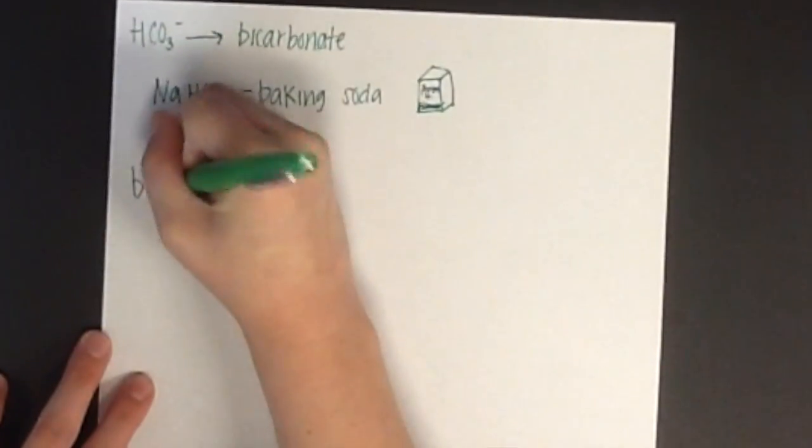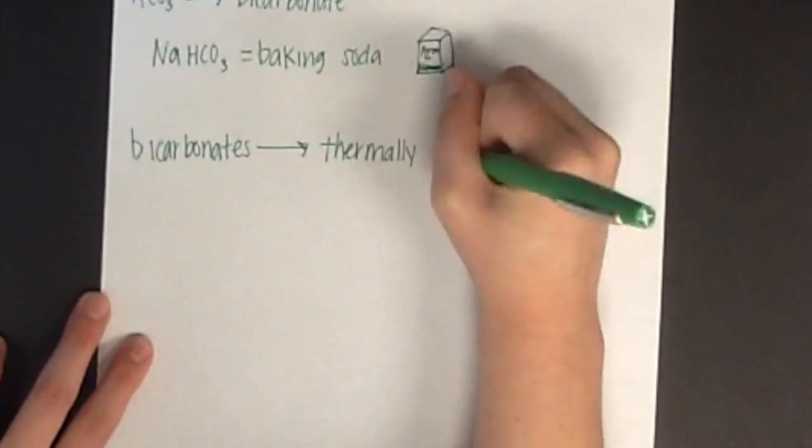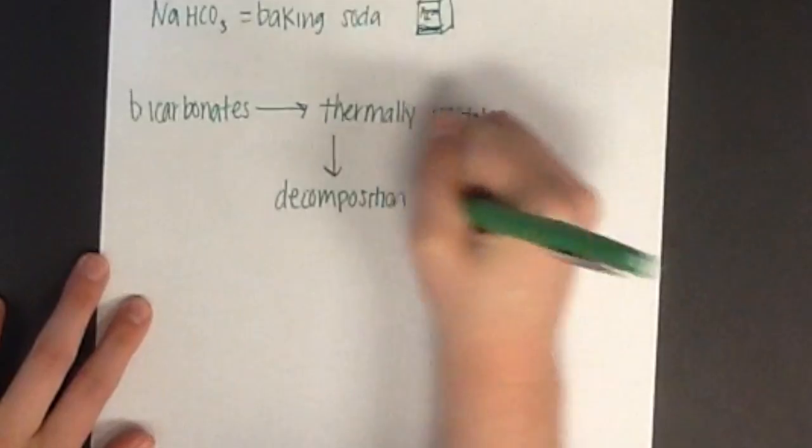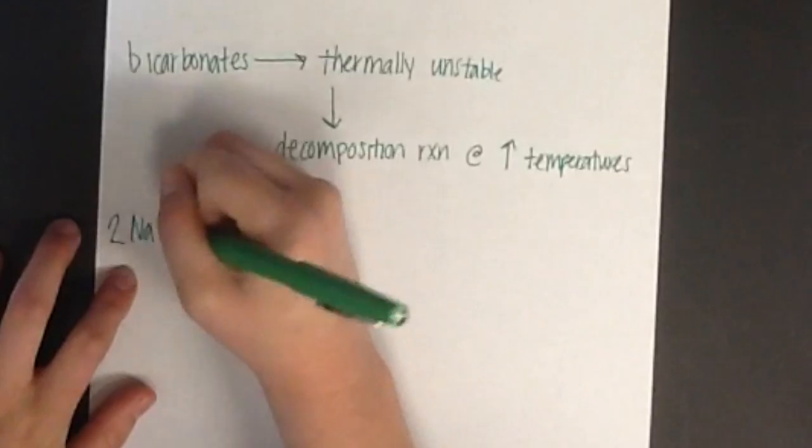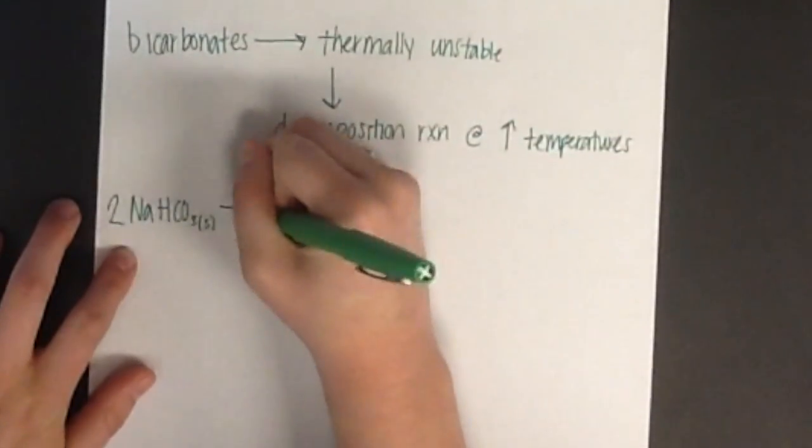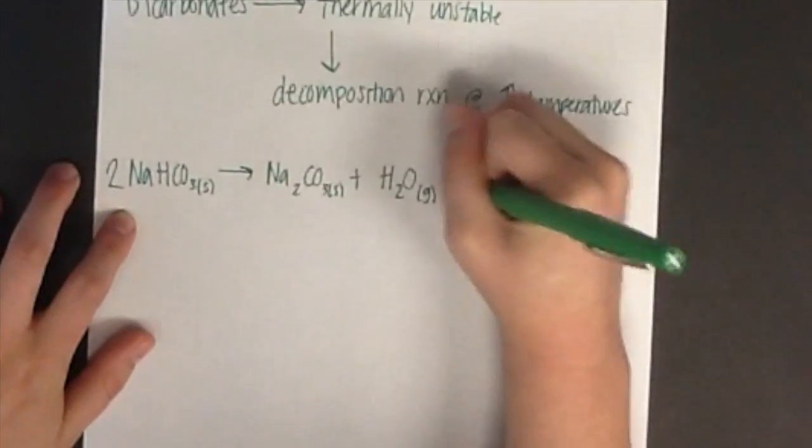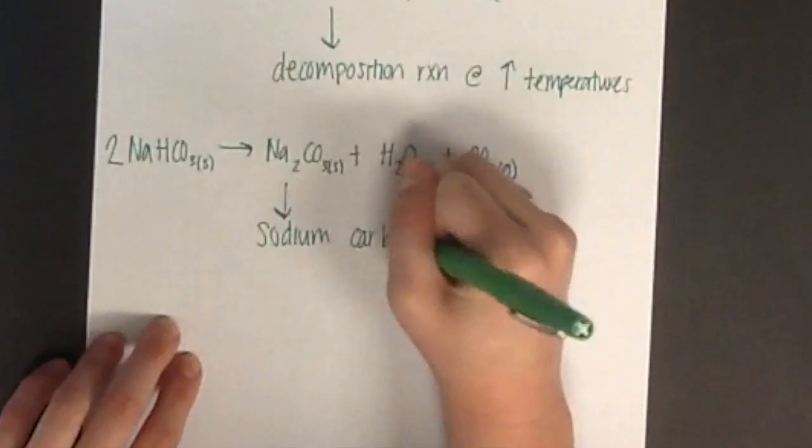Since bicarbonates are thermally unstable, they will undergo a decomposition reaction when they are under high temperatures. For example, if NaHCO3 is heated at high temperature, then the following reaction will occur, leaving behind a solid and two gases. These gases are H2O and CO2, and the solid is Na2CO3, also known as sodium carbonate because the ion CO3- is called a carbonate.